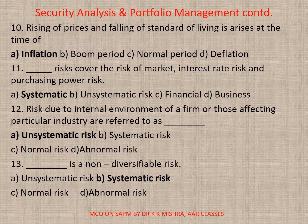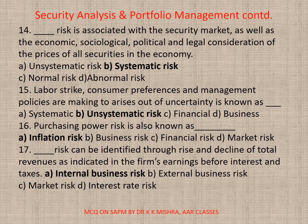Question 13: Dash risk is associated with the security market as well as the economic, sociological, political, and legal consideration of the prices of all securities in the economy. Options: A. Unsystematic risk, B. Systematic risk, C. Normal risk, D. Abnormal risk — correct option B: Systematic risk. Question 14 (same pattern). Question 15: Leverage, consumer preferences, and management policies are making risk arise out of uncertainty — correct option B: Unsystematic risk.